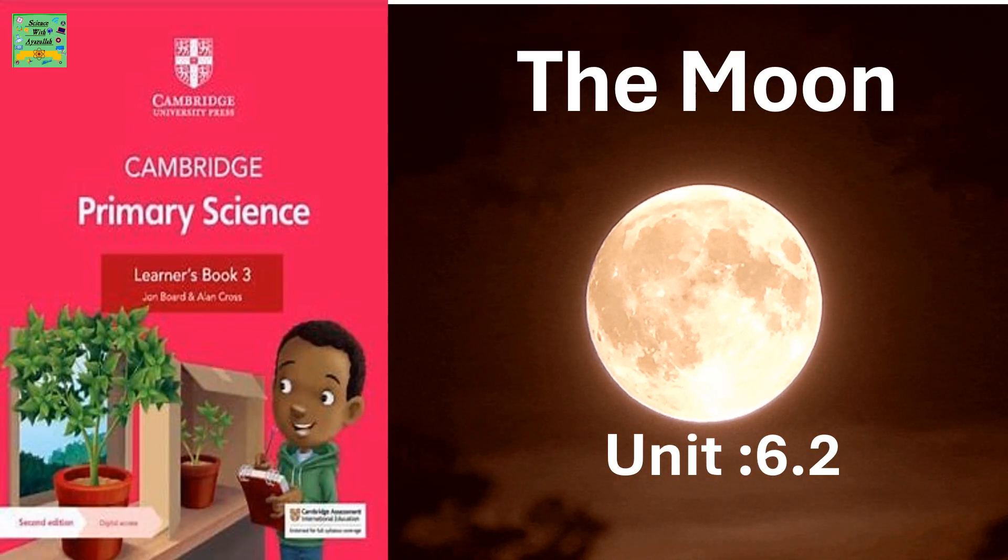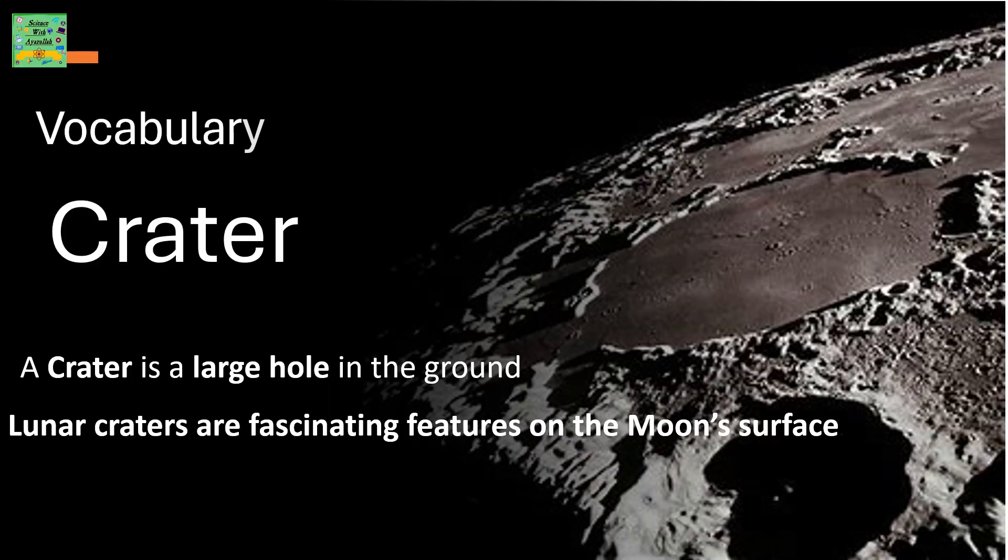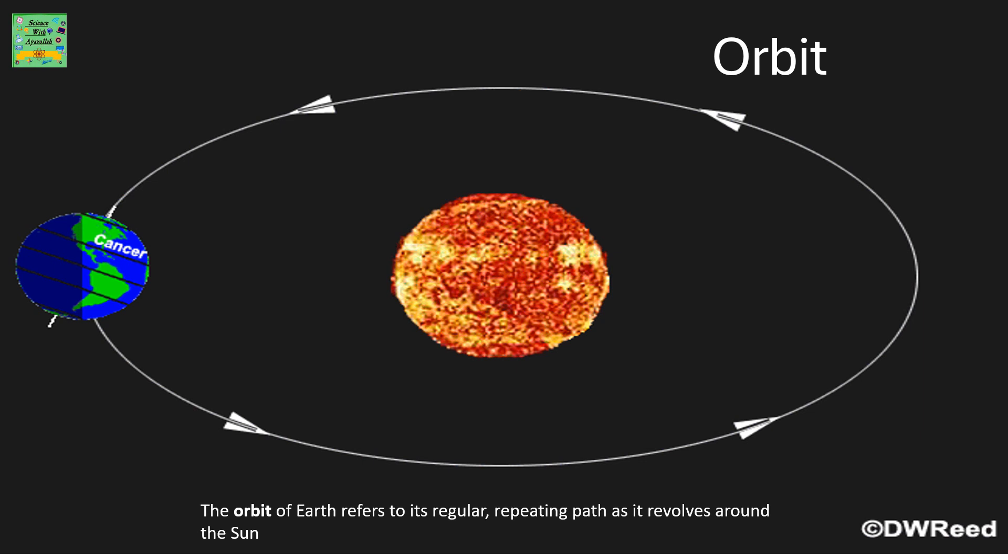The moon, unit 6.2. Vocabulary: Crater - a crater is a large hole in the ground. Lunar craters are fascinating features on the moon's surface. Orbit - the orbit of Earth refers to its regular, repeating path as it revolves around the sun.